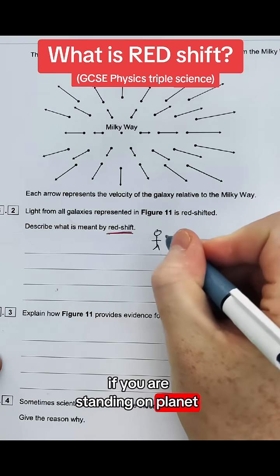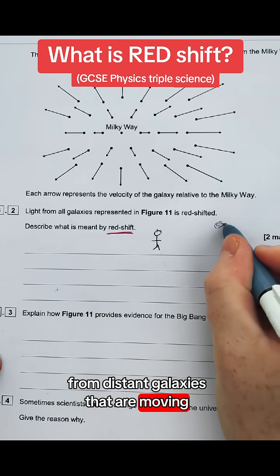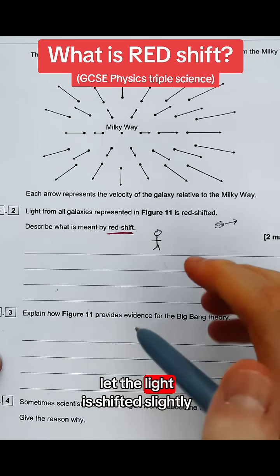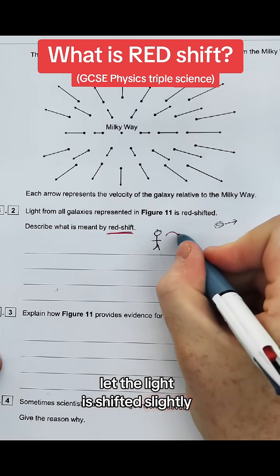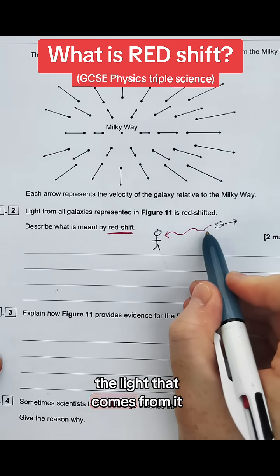If you are standing on planet Earth and observe light from distant galaxies that are moving far away, what happens is the light is shifted slightly towards the red end of the spectrum. It's not red, but it's shifted slightly.